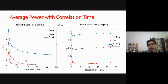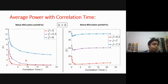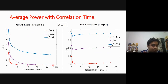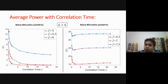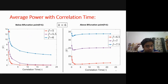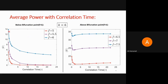The key phenomenology and key result of this project is that above the bifurcation point, the power input into the system can be minimized at a finite correlation time. As expected, below the bifurcation point, increasing the correlation time moves the system from the thermal bath limit to the deterministic limit — effectively like cooling the system. But above the bifurcation point, the power does not simply decrease: it goes below the average power at the deterministic limit and reaches a minimum at a finite correlation time, then increases back.